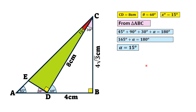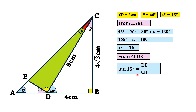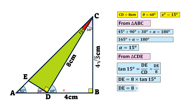Replacing alpha with 15 degrees, we now consider the green shaded triangle CDE. Taking tangent of 15 degrees, we know tan θ = opposite over adjacent. The opposite is DE and the adjacent is CD, which is 8 units. So DE = 8 × tan(15°). Since tan(15°) = 0.2679, DE = 2.1436 cm.